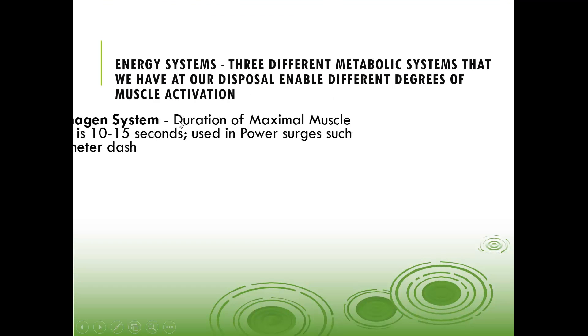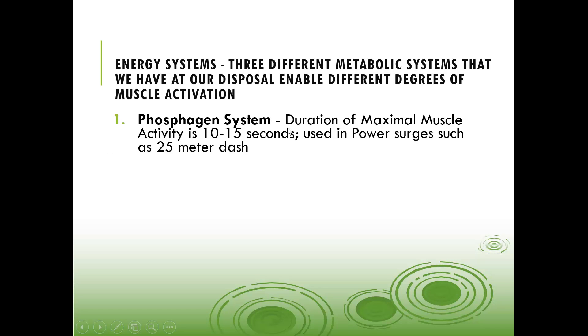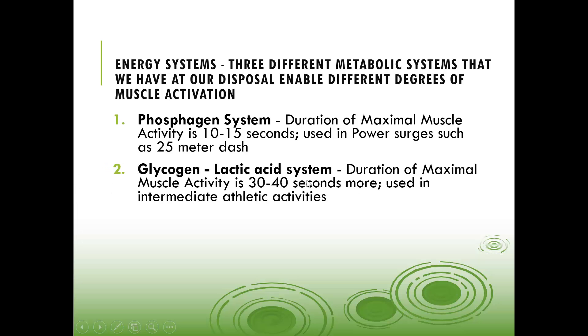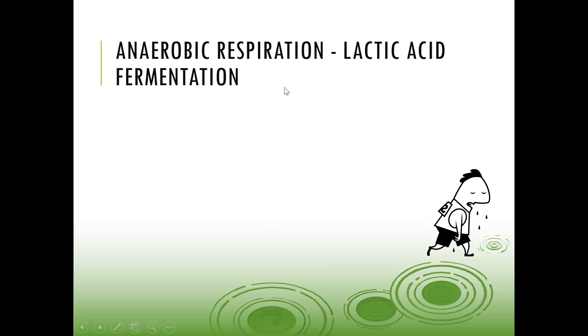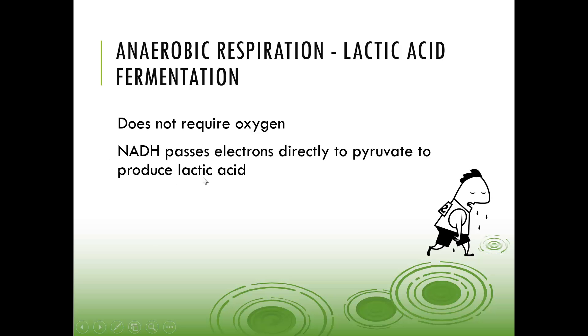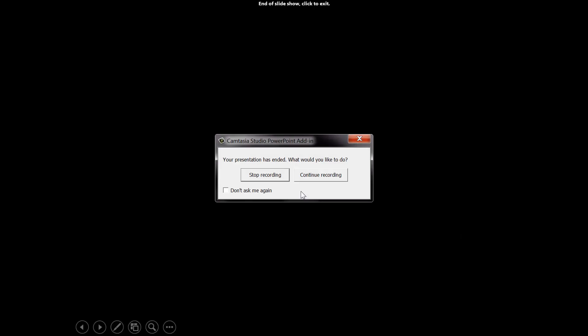There are three different metabolic systems we have at our disposal. We have the phosphagen system. When we have maximal muscle activity, it's used in power surges, such as like the 25 meter dash. Your lactic acid is for 30 to 40 seconds. This is intermediate athletes. And then we have our aerobic, which is unlimited time. As long as you have nutrients, this prolongs the athletic activities, such as your marathons. Anaerobic respiration, lactic acid fermentation does not require oxygen. What happens is the NADH passes the electrons directly to the pyruvate, and lactic acid is produced.